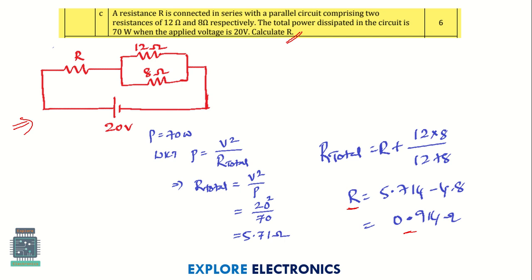Here is the problem: two resistances are connected in parallel and an unknown resistance is connected in series. We need to find it out. They have given the power dissipation, so I have solved the problem here — you can go through this.